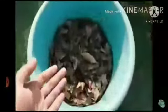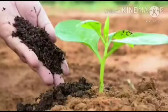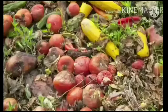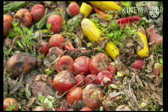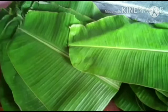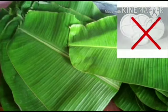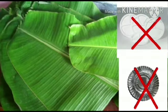Biodegradable materials can be decomposed or broken down and returned to the soil, becoming food for plants. These biodegradable items are environment-friendly or eco-friendly materials. For example, plantain leaves are fully biodegradable and do not contain chemicals like thermocole, plastic or coated paper plates.